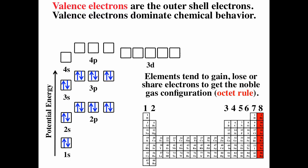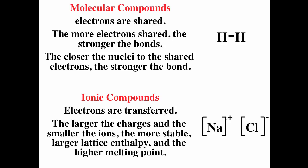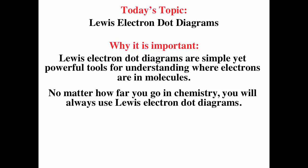Typically when two nonmetals react, they form a molecular compound by sharing electrons. The more electrons being shared, the stronger the bond. Smaller, closer atoms also form stronger bonds, but the number of electrons being shared is the most important consideration. To understand molecules better, one tool you can use is a Lewis electron dot diagram — a simple yet powerful tool for understanding where electrons are in molecules, whether bonding or non-bonding. No matter how far you go in chemistry, you will always use Lewis electron dot diagrams.